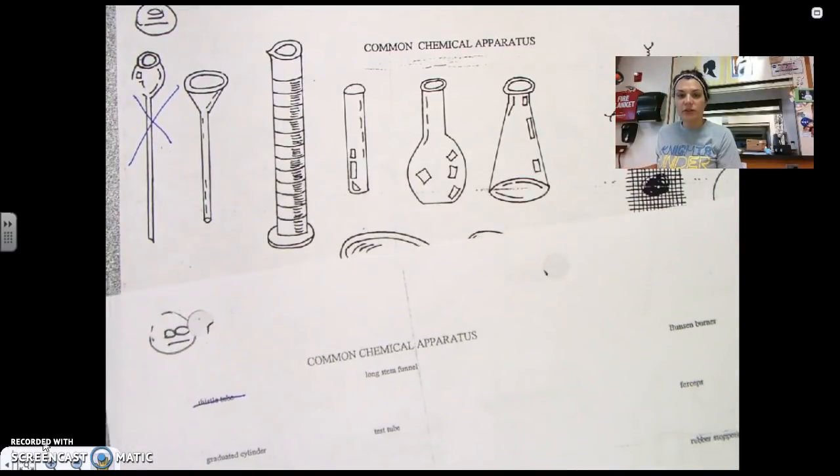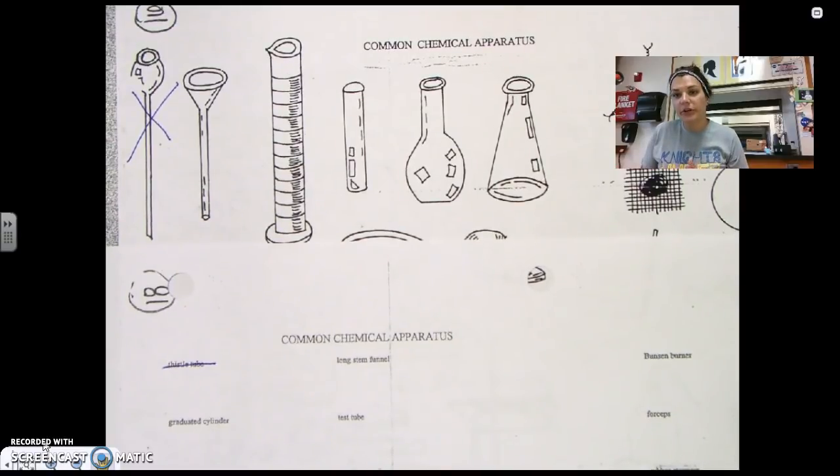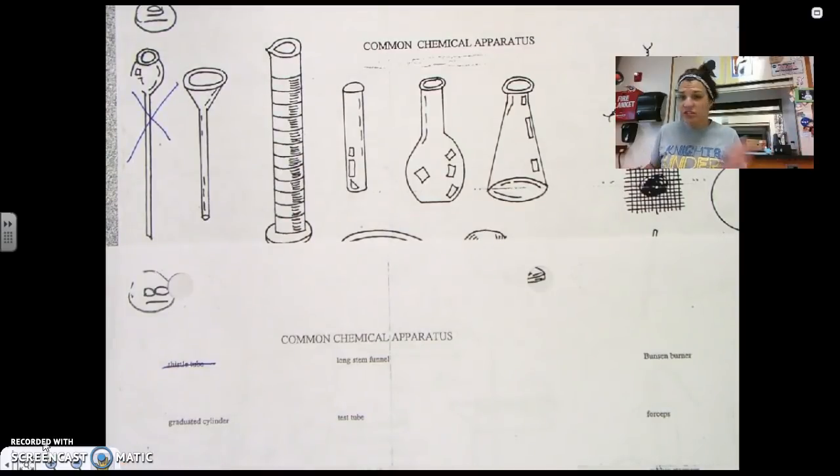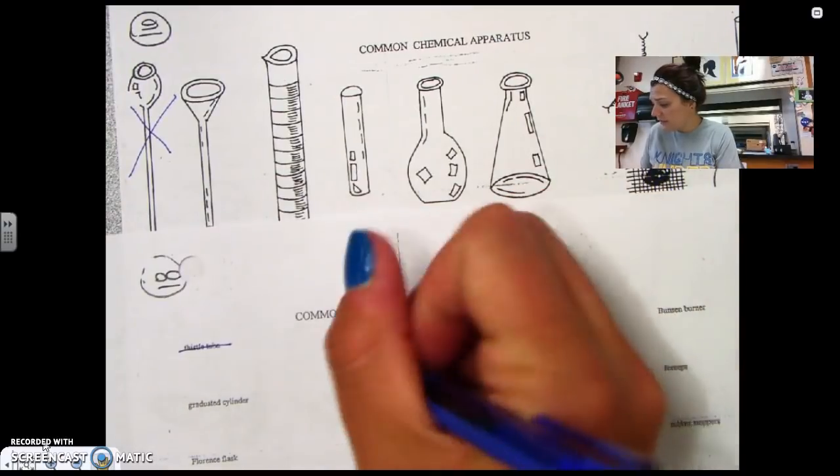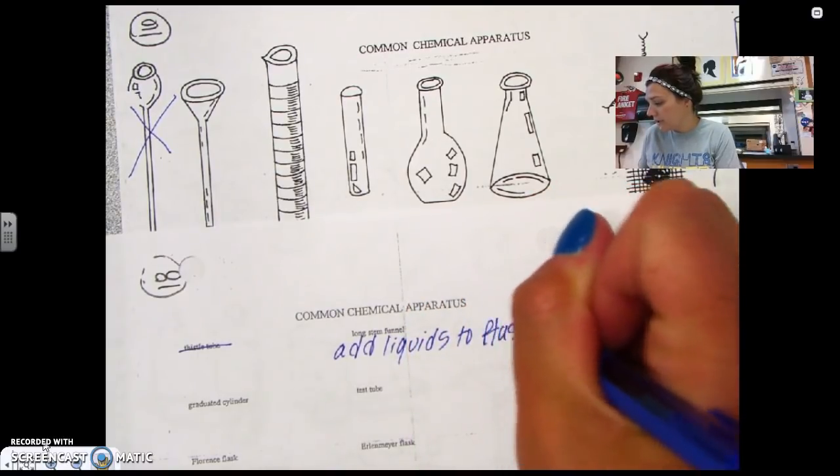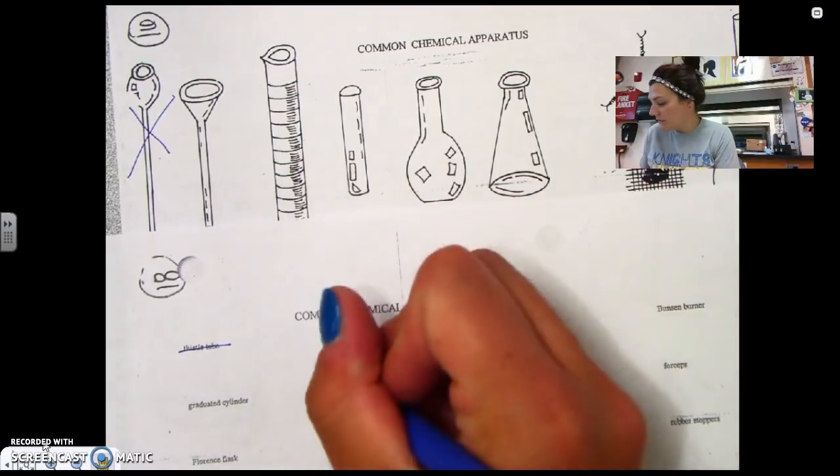The next one is a long stem funnel. Long stem funnels are important for when you have to separate out things. We also use them to get some things from one container, like say it's in a big bottle but we want to get it into a test tube. We can use a funnel for that. We have wet funnels for things that are wet like liquids, and then we also have dry funnels. You'll notice that the end of the funnel is a little bit bigger to make it easier for the solid to go through. So a long stem funnel is just to add liquids to a flask or a smaller container, and we also use them in filtrations.